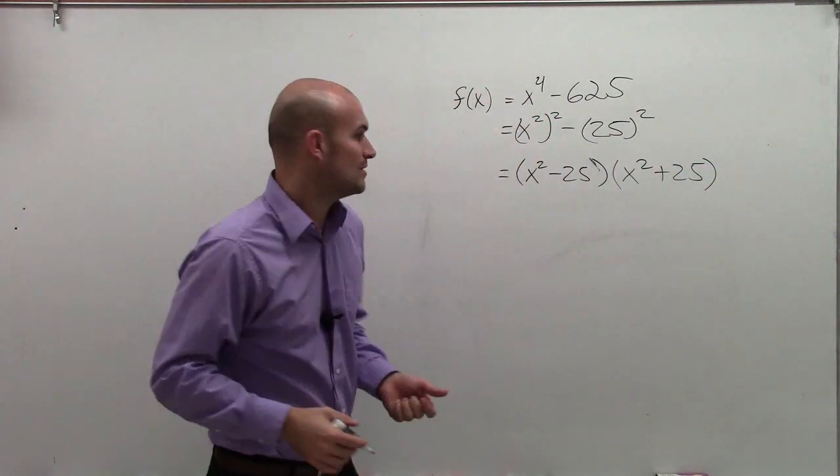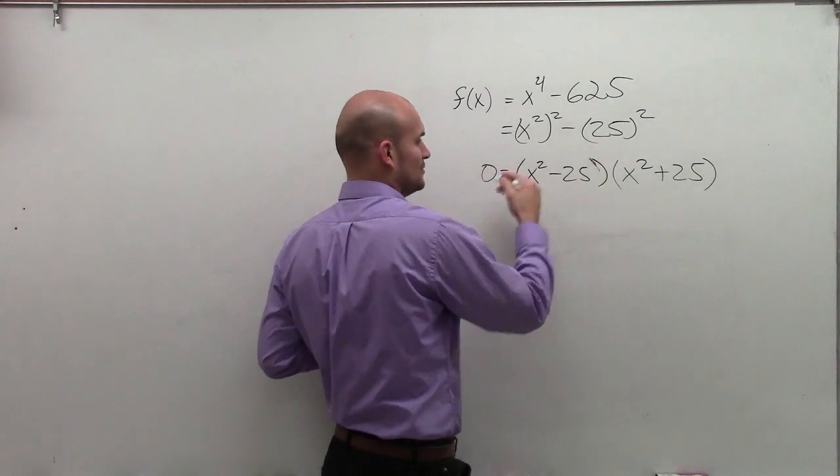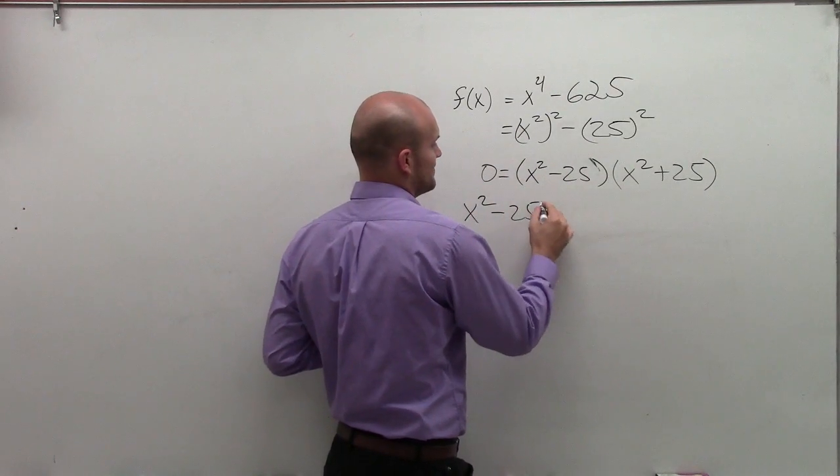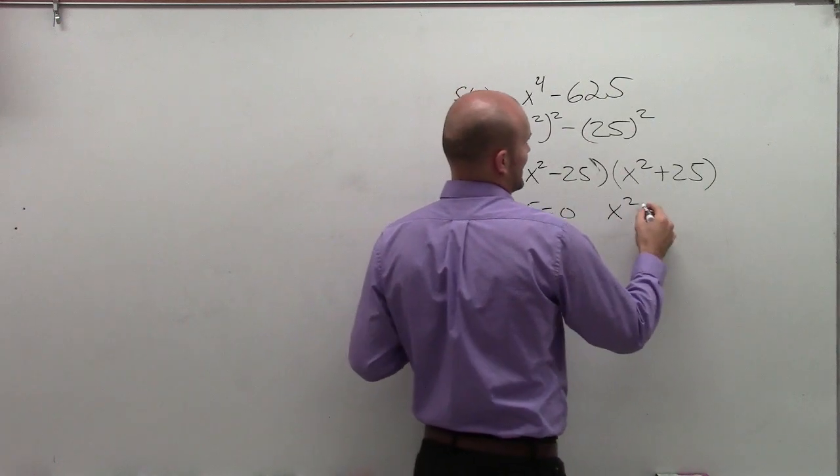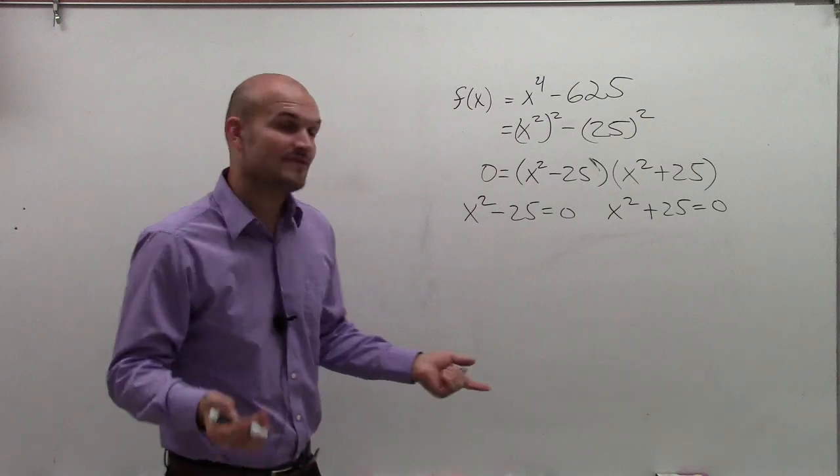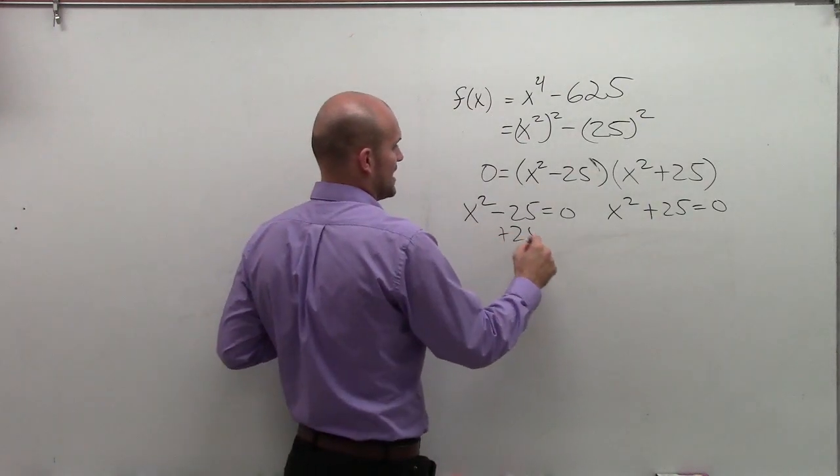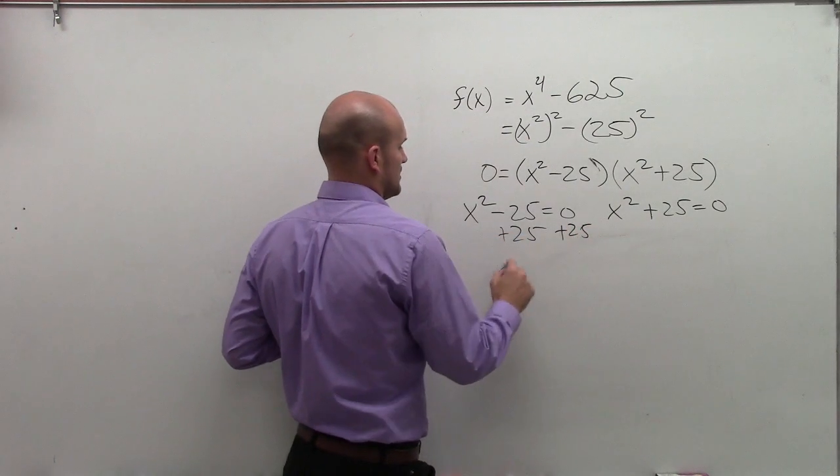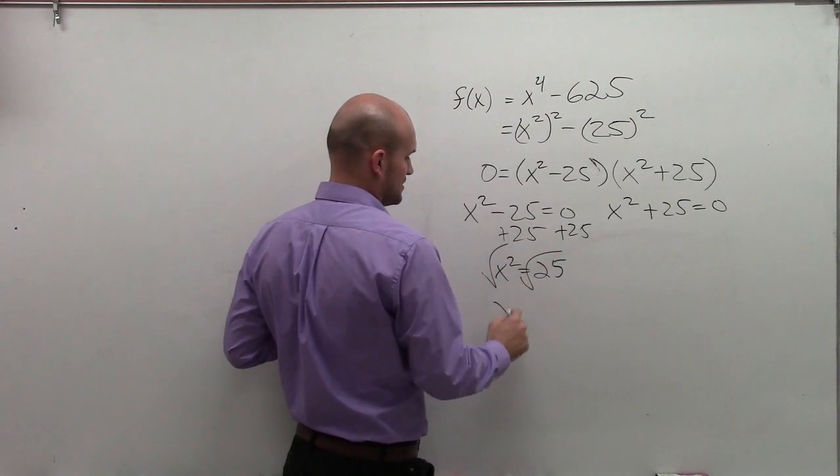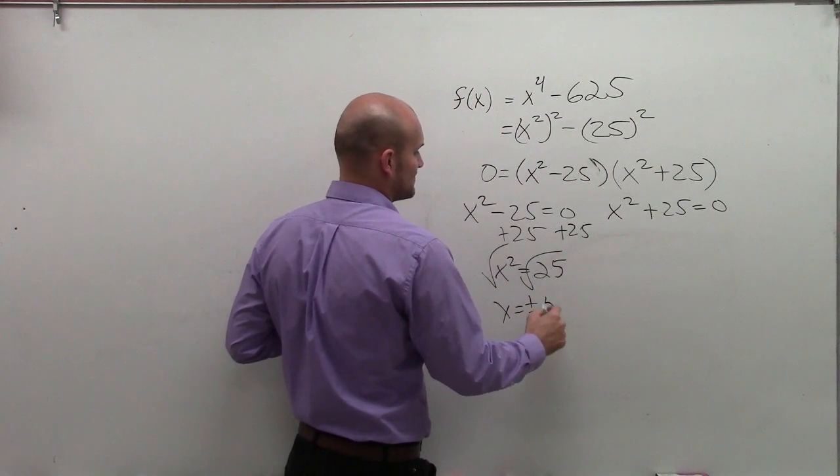So if I want to find the zeros, then I set this equal to zero using zero product property. I can say x squared minus 25 equals 0 and x squared plus 25 equals 0. Now to find the zeros, I'm just going to solve. So I add 25, I get x squared equals 25, square root both sides, x equals plus or minus 5.